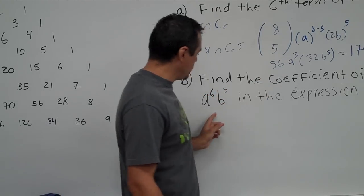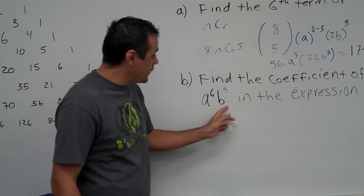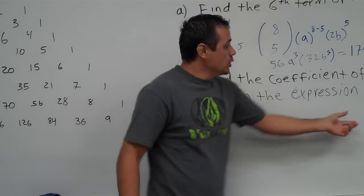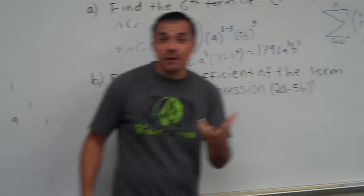It says, find the coefficient of the term a to the 6th, b to the 5th in the expression 2a minus 5b all to the 11th power.